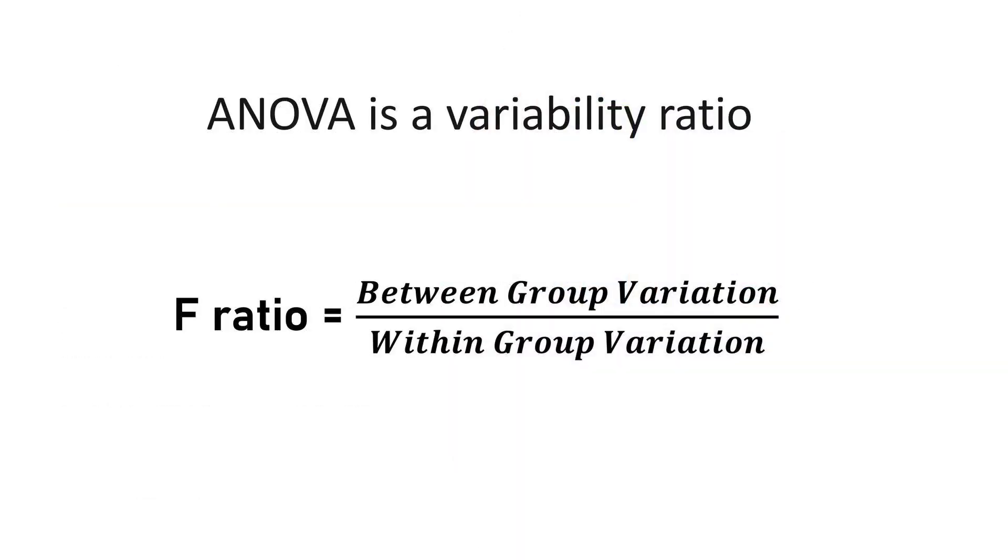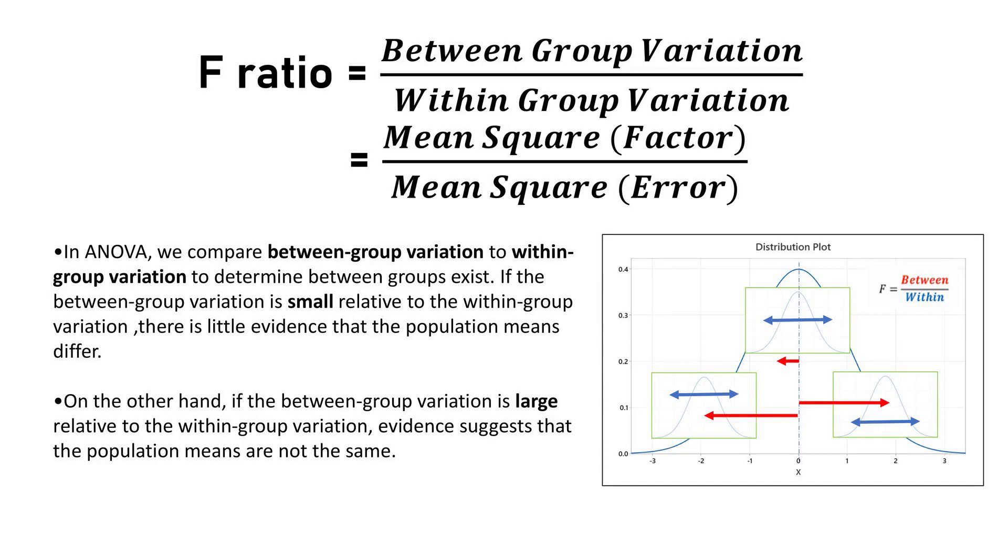The F-ratio in ANOVA compares between-group to within-group variance, indicating the presence of significant differences. A significant F-ratio suggests notable variance between groups, pointing to potential differences in mean values.